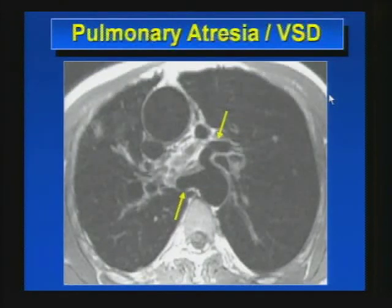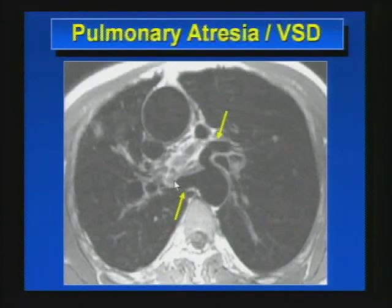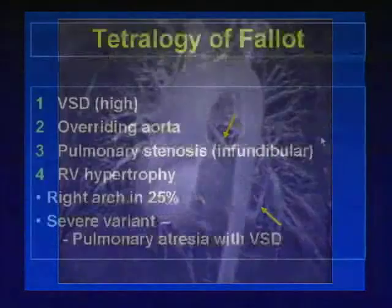In patients with pulmonary atresia and ventricular septal defect, we commonly see what is called a systemic to pulmonary artery collateral. Here we see huge vessels coming from the descending thoracic aorta to the lungs. This is very important for surgical planning — we must determine where the collaterals are and their course. A coronal MRA shows two very large systemic to pulmonary collaterals.